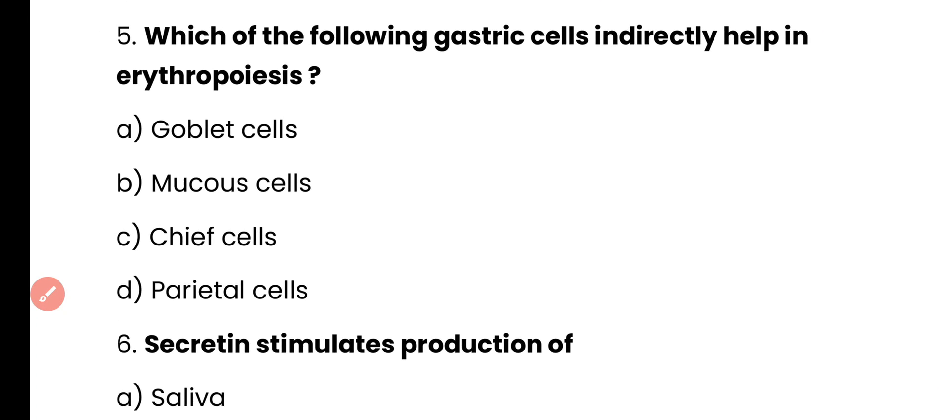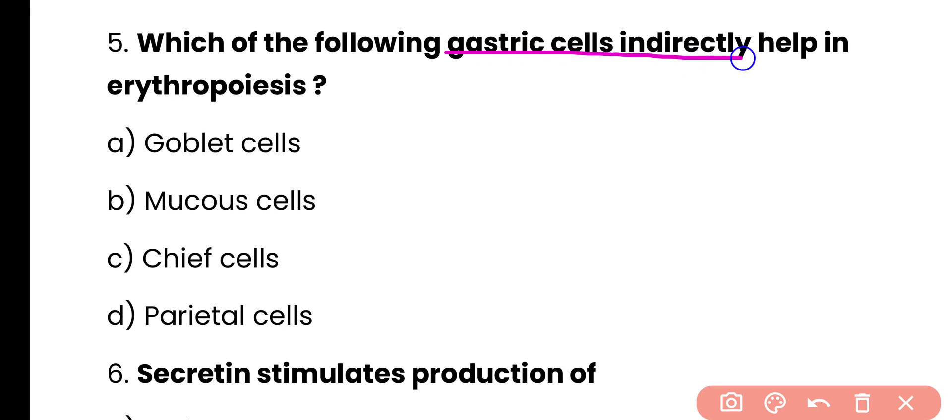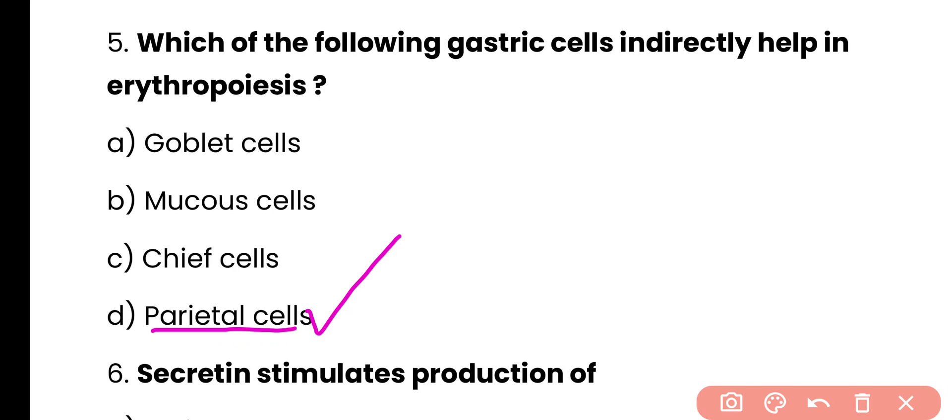Question 5: Which of the following gastric cells indirectly helps in erythropoiesis — red blood cell formation? Options: goblet cells, mucus cells, chief cells, or parietal cells. Correct answer is option D — parietal cells, also known as oxyntic cells, produce a glycoprotein called gastric intrinsic factor (GIF), which helps in absorption of Vitamin B12. Vitamin B12 further plays an important role in erythropoiesis. So parietal cells indirectly regulate erythropoiesis.